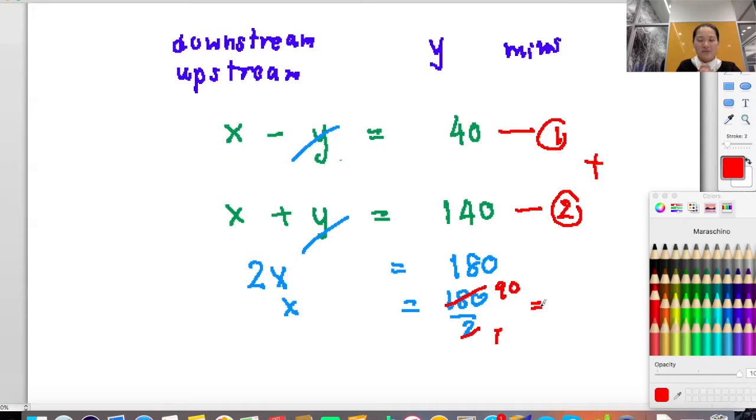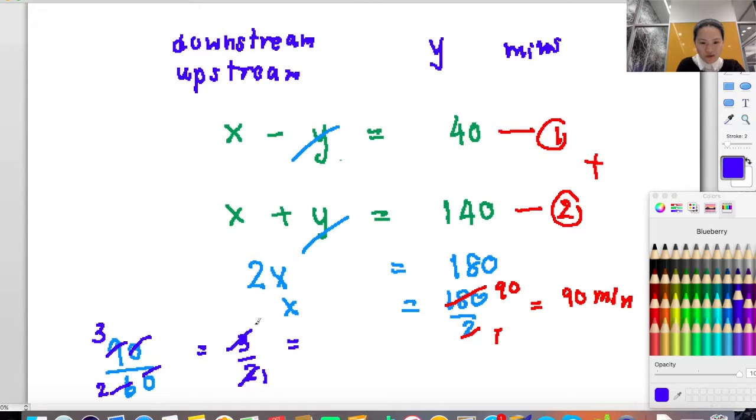So x, the time that Jasmine will use for paddling in still stream, is 90 minutes. To share 90 minutes to hours, you have to divide it by 60, because one hour equals 60 minutes. Cut them, so it equals 3 over 2, which means it equals one and a half hours.